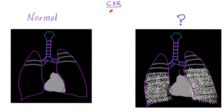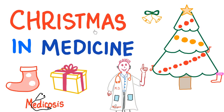Let's start with a question. Here is the normal chest x-ray — you see the beautiful lungs, the ribs, and the beautiful cardiac silhouette. But what if it is snowing inside the lung? You see snowflakes all over the lung fields. What is this? Please let me know in the comments. In the last year we talked about Christmas in medicine. Today it is snow in medicine.